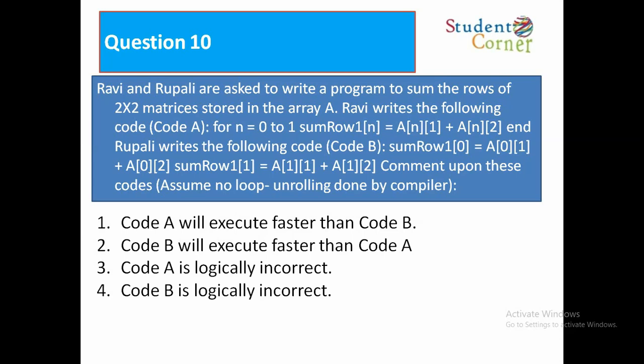Option 1: code A will execute faster than code B. Option 2: code B will execute faster than code A. Option 3: code A is logically incorrect. Option 4: code B is logically incorrect. The answer is code B will execute faster than code A.